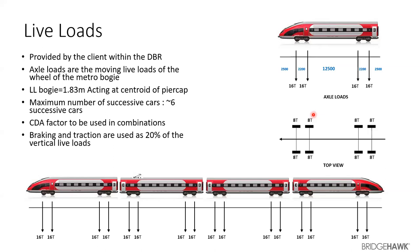Braking and traction — the train is going to run on the tracks, but it also has to stop. Just as when you brake a car there's friction and traction on the tires, when the bogie runs on tracks and brakes are applied, the tracks experience braking and traction loads. These are transferred from tracks to the girders, from girders to the piers, and from piers to the foundation. This is taken as 20% of the vertical live load.